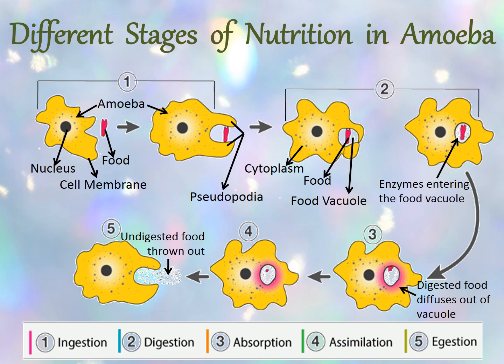In the third step, simple soluble substances gradually get absorbed into the amoeba. Now see the fourth step — the absorbed food is used for its growth, development, multiplication, and release of energy. And in the fifth step, the undigested food is thrown out, or you can say ejected, by rupturing the cell membrane at any place.